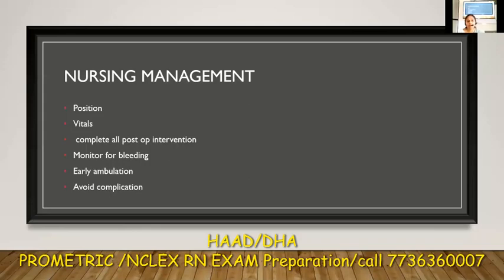Third, complete all post-operative interventions according to the agency protocol or the doctor's order. Next is to monitor for bleeding. Signs of bleeding need to be observed — vital signs will give a clear idea, and you can also assess the dressing. If the dressing changes color or gets wet at the surgical site, monitor to identify bleeding. When a drain is in place, assess the drain output.